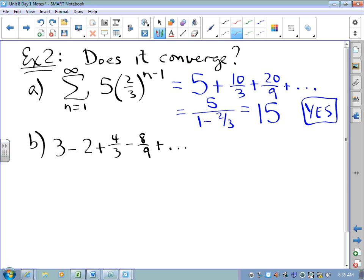We say yes. Similarly, this second series, I've got to identify r in this case. This r is any term divided by the 1 before it. You could have taken 4 thirds and divided by negative 2 or negative 8 ninths and divided by 4 thirds.